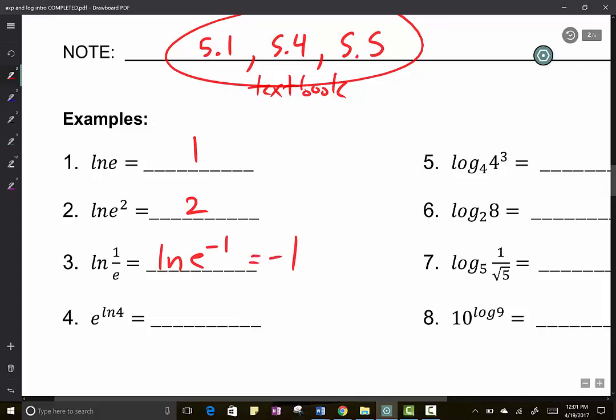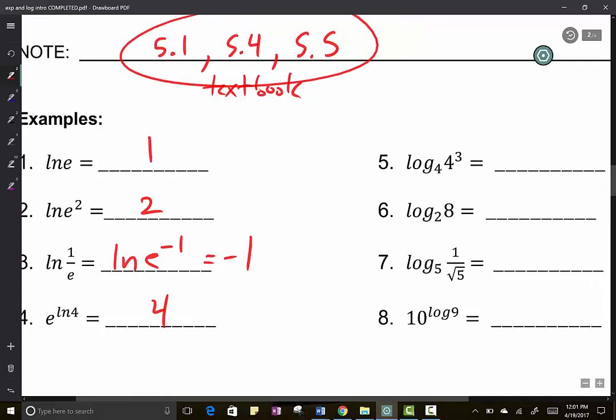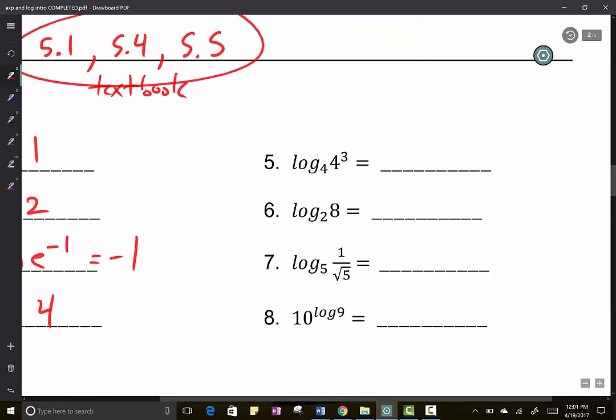So you might have to do some rewriting. What about number four? E to the Ln of four? Four. They cancel again. They're inverses. Don't forget. They are inverses. What about five? These numbers are the same. So what happens? These numbers are not the same. So what happens? Two to the what power equals eight?